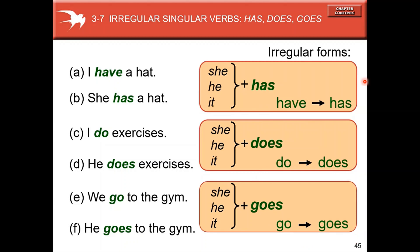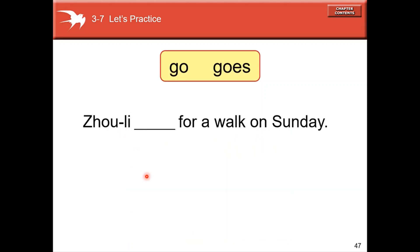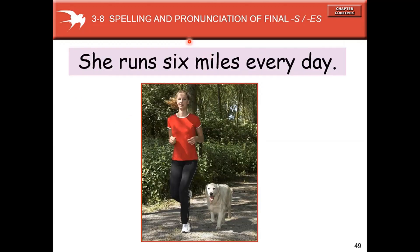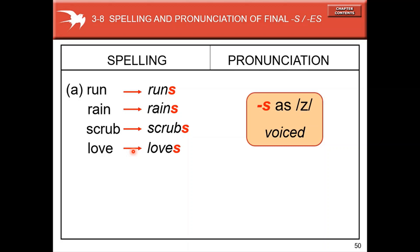Let's do another exercise — choose the correct form. Good! Now: 'She runs six miles every day.' We add -s because the subject is 'she.' Let's review the spelling rules for third person singular -s and -es endings.